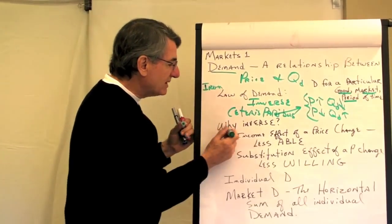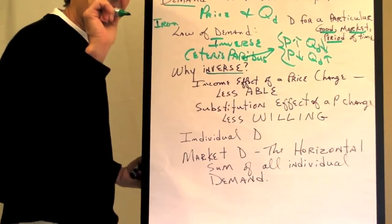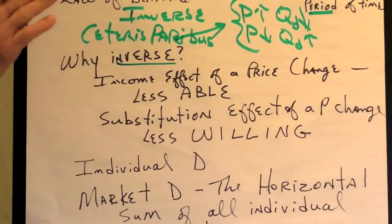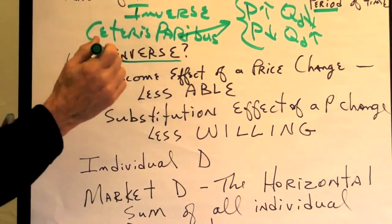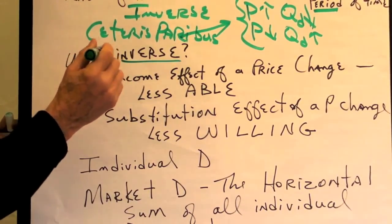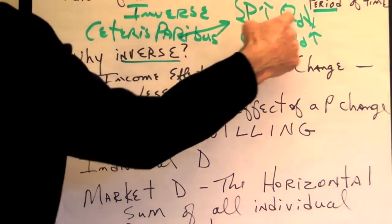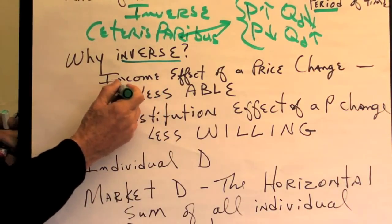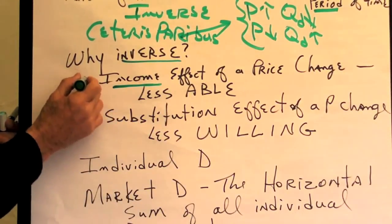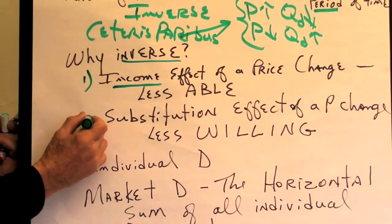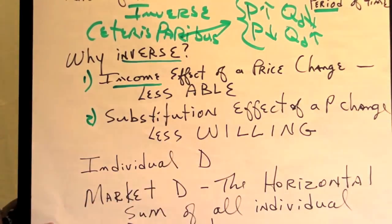So, why is this relationship inverse? When the price of a good goes up, people will buy less. If the price goes up, the quantity demanded will go down because of what is called the income effect of a price change — that's the first one. And the second one is the substitution effect of a price change.